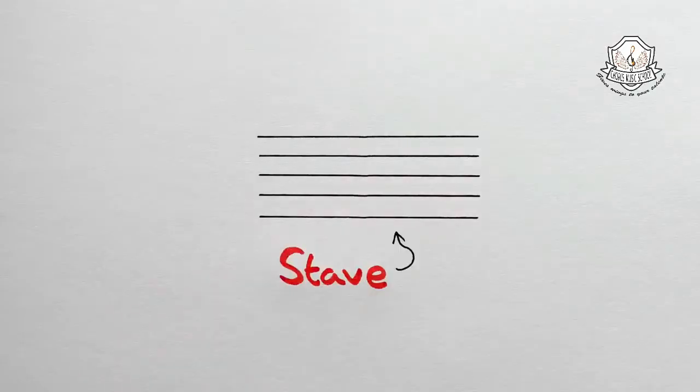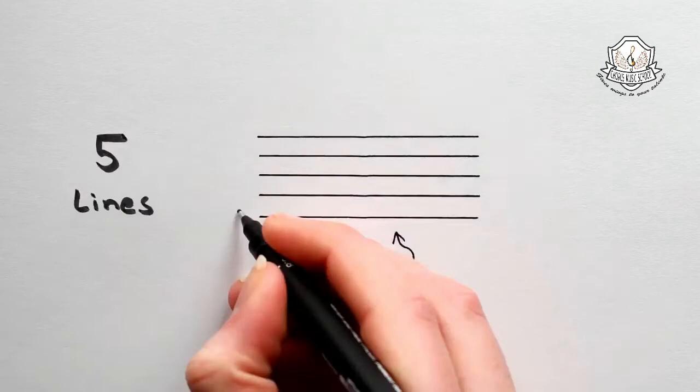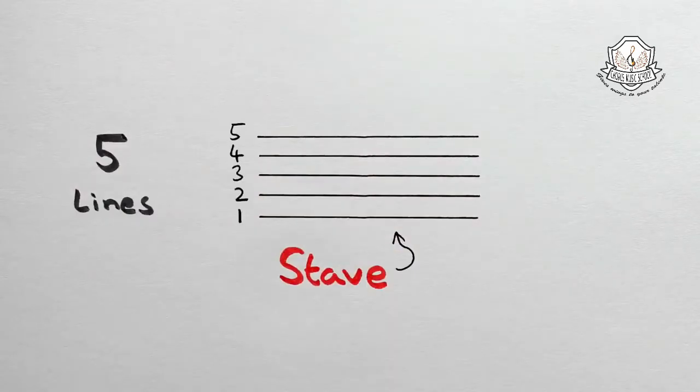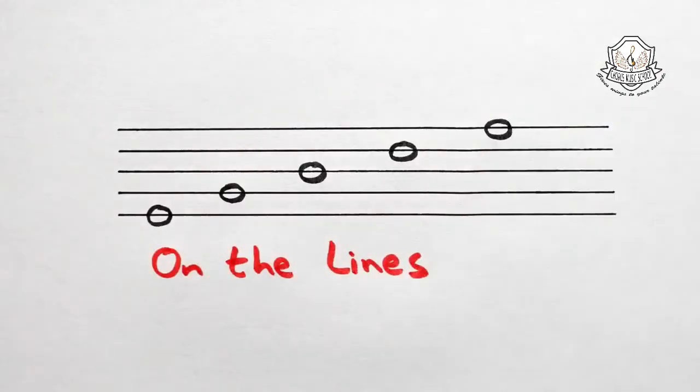We show pitch by using a stave, a group of five lines and four spaces. Notes can be written on any line or in any space. Here's what notes look like when they're on the lines, and here's what they look like when they're in the spaces between the lines.